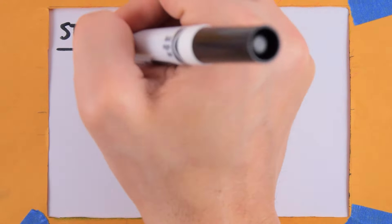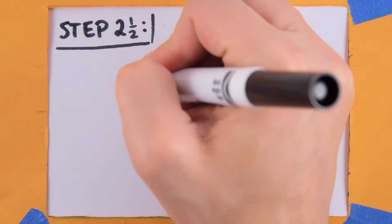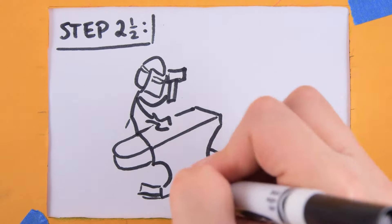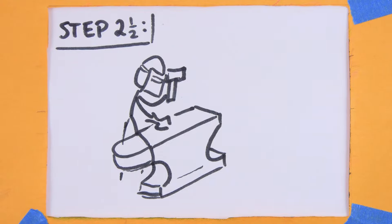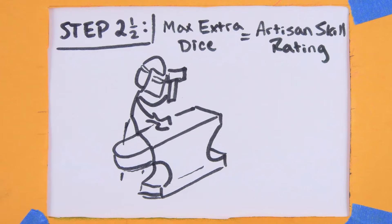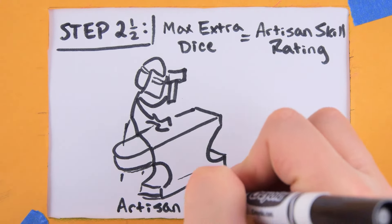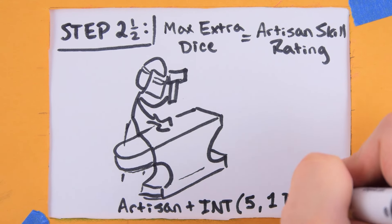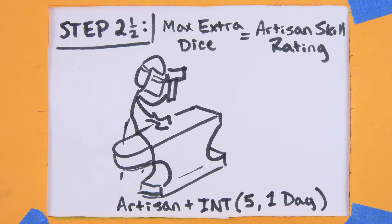If you have the artisan skill and take time to craft the talismah yourself, you can gain extra dice for step 5. The maximum number of extra dice you gain from crafting your own talismah is equal to how many ranks you have in the artisan skill. Make an extended test using your artisan plus intuition, a threshold of 5, and 1 day per test.